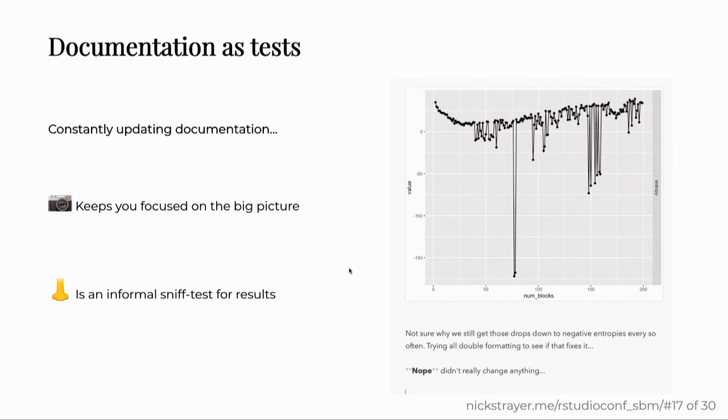Taking a step back also for the test side of things, this documentation can serve as a test in a way too. As you do this research and you're constantly updating your documentation over that process, it keeps you focused on the big picture. You don't want to get stuck in the unit test, working little toy examples, open it up to the real world, and then you start having problems where any time you run it with something over 100 nodes, it takes a million years to run. And it can serve as an informal sniff test for results. This picture on the right is an example where I was working with some data and it kept on having these really big drops. It was actually dropping into negative values, which shouldn't be possible. By digging into that, all my tests were passing. But I actually found a bug in the logic of the code from looking at this.